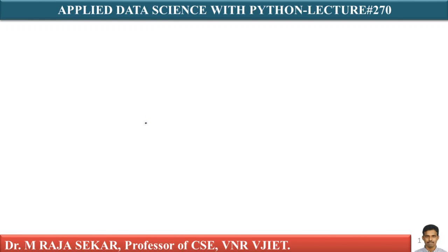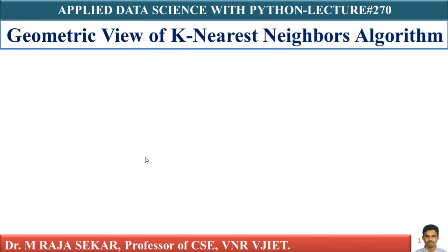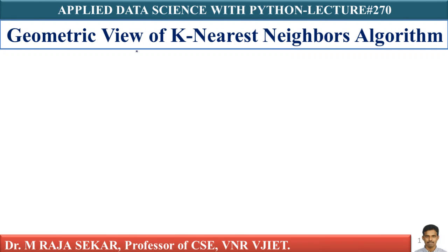My dear friends, welcome to Rajshaker Classes on Applied Data Science with Python. This is lecture number 270. In this lecture, we will try to understand the geometrical interpretation of the k-nearest neighborhood algorithm.